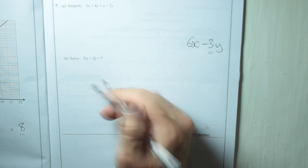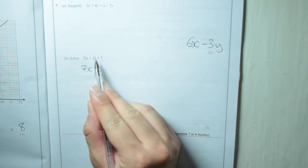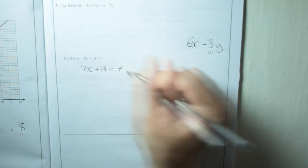So 7 lots of x is 7x. 7 lots of 2 is 14, so plus 14, and that equals 7.